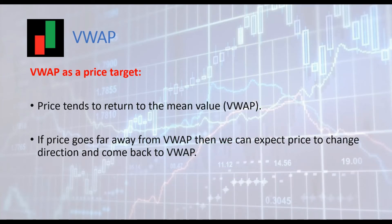In the third strategy, VWAP is used as a target. Price always returns to the mean. When price goes far away from VWAP, the probability increases that price will come back to the VWAP — this is what we call mean reversion. Let's see some examples.